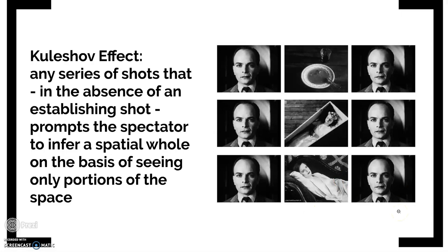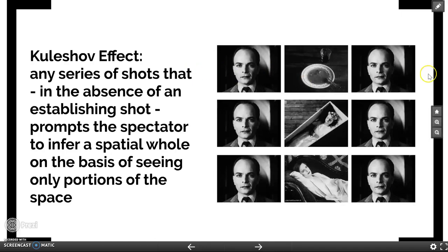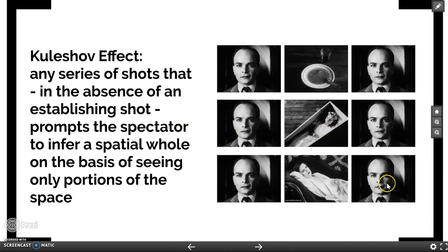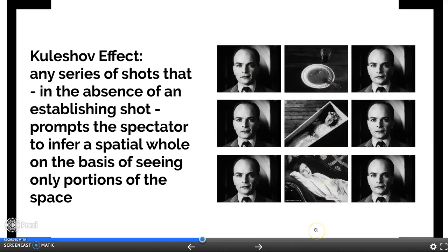What he realized when he showed audiences these images in sequence is that the audience would infer that they were connected to each other, even though there wasn't any evidence of connection. In the top series of images, the audience would say this man is so hungry for this bowl of soup. In the middle series, the audience would say the man is so distraught over the death of the child. And in the third series, the man loves this woman so much. We never see the man and the bowl of soup, the child, or the woman in the same shot, but we infer they're happening at the same place and time, and draw a connection between them.